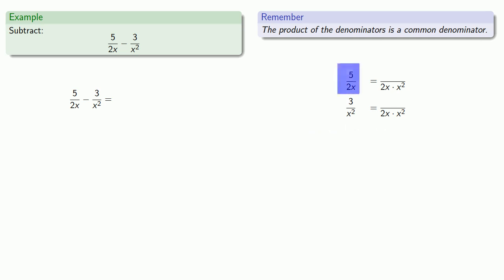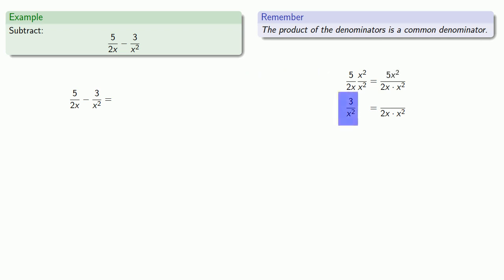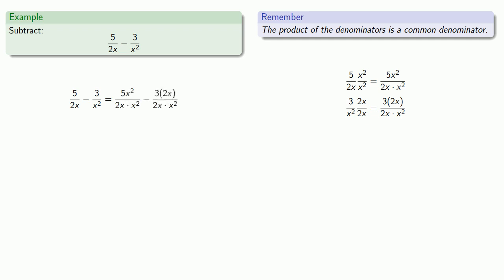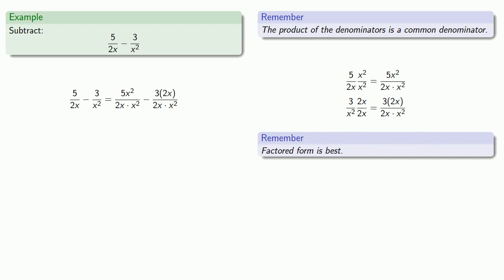In our first fraction, the factor we're missing is x squared, so we'll multiply numerator and denominator by x squared. Our second fraction has a denominator of x squared; to make that denominator 2x times x squared, we need to multiply the denominator by 2x, and also multiply the numerator by 2x. So our new equivalent fractions are 5x squared over 2x times x squared, and 3 times 2x over 2x times x squared. Remember, factored form is best, so let's leave our fractions in this form.